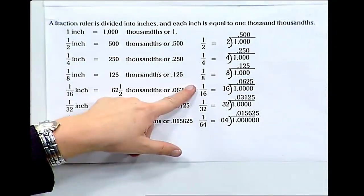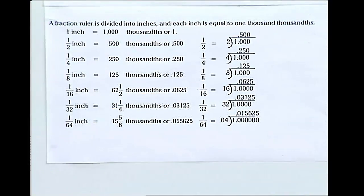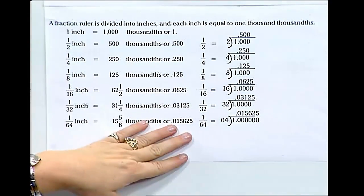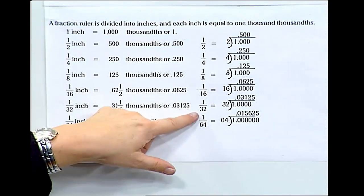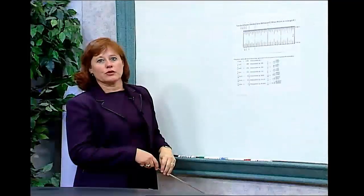If I take sixteen into one, I get .0625, which is equivalent to sixty-two and one-half thousandths. I can do the divisions as long as I need to do the divisions. You can always divide the denominator of the fraction into the numerator of the fraction to find out the decimal value.